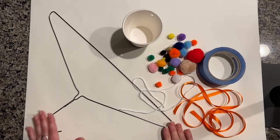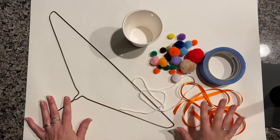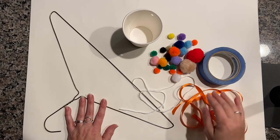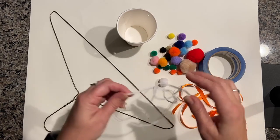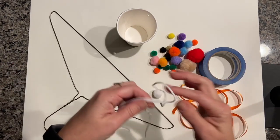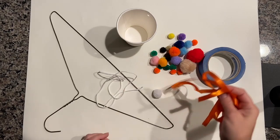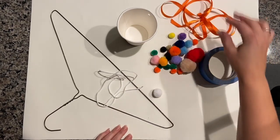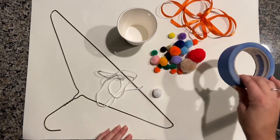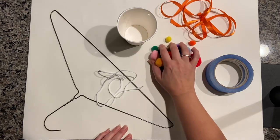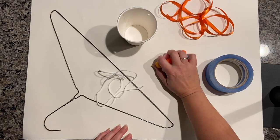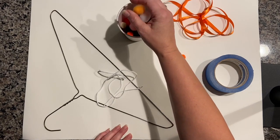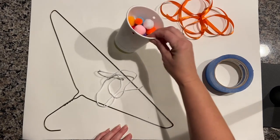Here we have all our supplies laid out for our coat hanger catapult. We've got our coat hanger, a cup with holes already punched in it, elastic cord, ribbon, masking tape, and assorted pom-poms, which I'm going to put inside of our cup and set them aside for now.